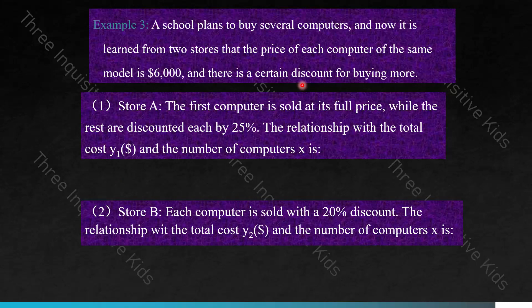Now we're going to do example three. A school plans to buy several computers. The price of each computer is $6,000, with a certain discount for buying more. Store A sells the first computer at full price, while the rest are each discounted by 25%. Store B sells each computer with a 20% discount. Find the relationship between total cost Y1 (store A) and Y2 (store B) and the number of computers X.